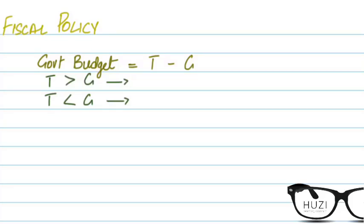Fiscal policy is the other type of demand management policy, which means that it impacts aggregate demand or aggregate expenditure. So basically, if your Y is less than Y-star or Y is greater than Y-star, fiscal policy is used to recover or remove any severe inflationary or deflationary gap — basically to correct fundamental disequilibrium, or fundamental output gap. Another objective of fiscal policy is to maintain the economy once disequilibrium has been corrected and removed.